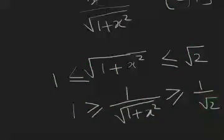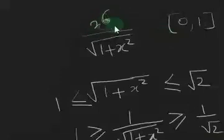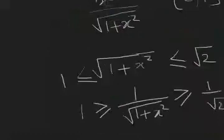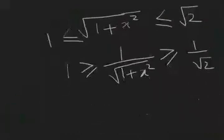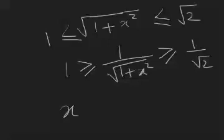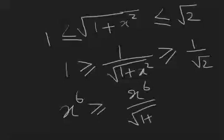So 1/√(1+x²) is between 1 and 1/√2. Now, x⁶ is non-negative over this interval, so you can multiply x⁶ throughout the inequality without changing the inequality symbols. When you multiply x⁶ throughout the inequality, you get x⁶/√(1+x²) bounded between x⁶/√2 and x⁶.